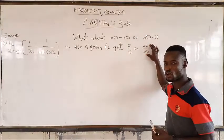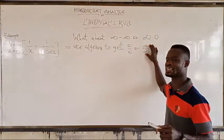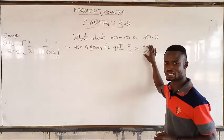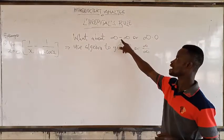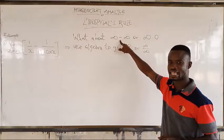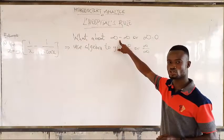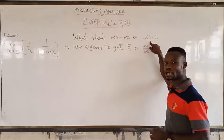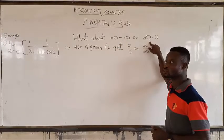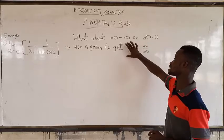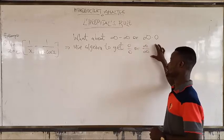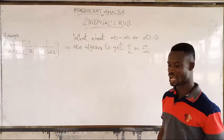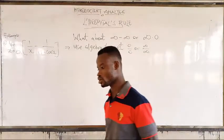We know already that if it's not in the indeterminate form, you can use L'Hôpital's rule. So infinity minus infinity or infinity times 0 — these are the indeterminate forms for which we use L'Hôpital's rule.